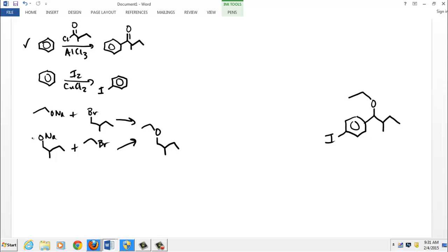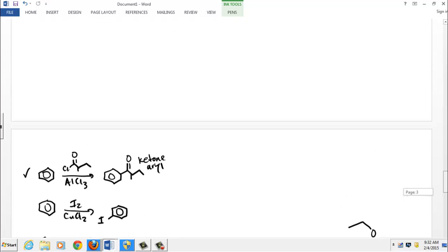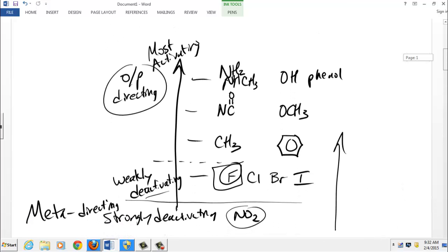A couple things to consider just kind of get our brains moving here. What kind of directing group is a ketone? Actually, this is an aryl ketone. A ketone attached directly to the benzene ring. Well, we got to look at our list of ortho-para directing groups. And this kind of looks like a ketone. No, it's not a ketone. It's an amide.